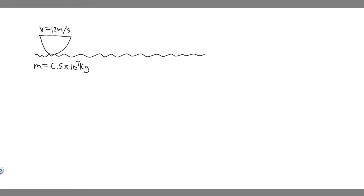In this problem, we're told a large cruise ship of mass 6.5 times 10 to the 7 kilograms has a speed of 12 meters per second at some instant. What is the ship's kinetic energy at this time? How much work is required to stop it? And what is the magnitude of the constant force required to stop it as it undergoes a displacement of 2.5 kilometers?